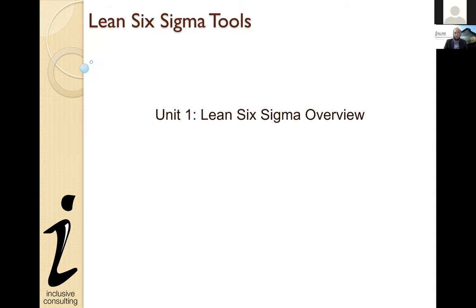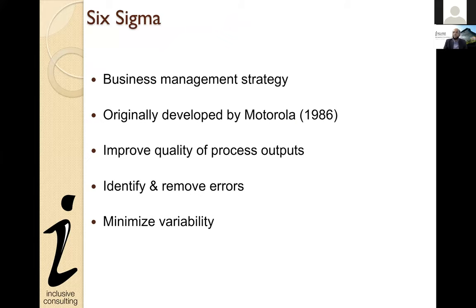The first unit is an overview of Lean Six Sigma. It is basically a business management strategy — people get confused about whether it's a process management strategy or a quality management strategy, but it is actually a business management strategy. It helps you identify and improve the quality of your entire business process. It was originally developed by Motorola in 1986, but it was pioneered and made popular by GE — General Electric — who institutionalized it and then expanded it to make it globally recognized and commercially available to other organizations.